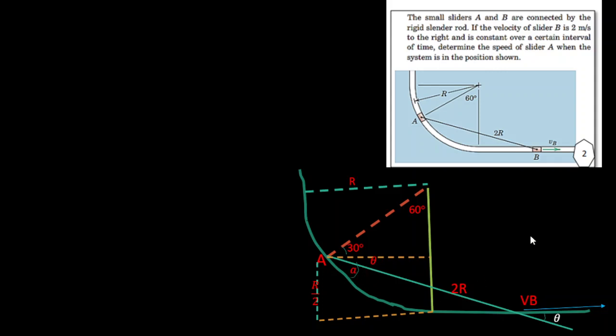So we can calculate the required value, which is the speed of A, from the given equation. We are given the speed of B is equal to 2 meters per second. Here, sin theta...